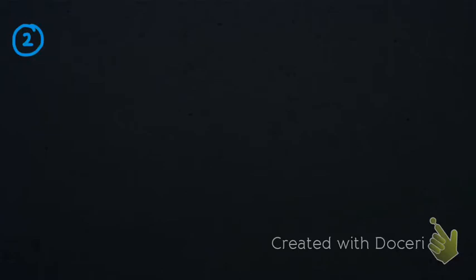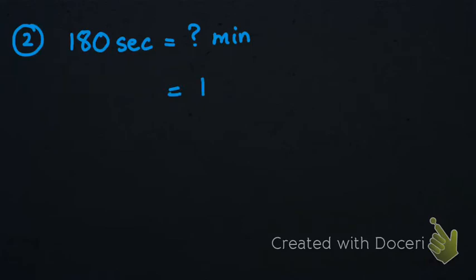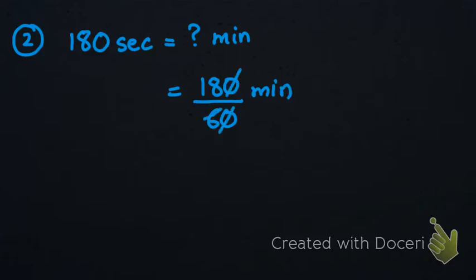Let's take an example. We have 180 seconds and we need to convert them into minutes. So we are going to divide 180 by 60, which gives us 3 minutes.